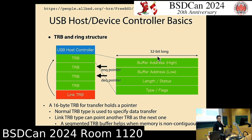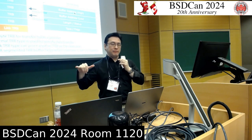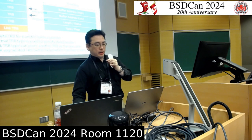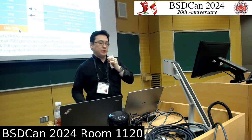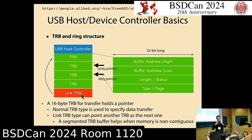A normal TRB has buffer address, length, and type fields. A Link TRB stores the real table address of the next TRB in the first field. You can have an arbitrarily long ring buffer — just an array with a Link TRB at the tail. There is no limitation on the length of the ring buffer.